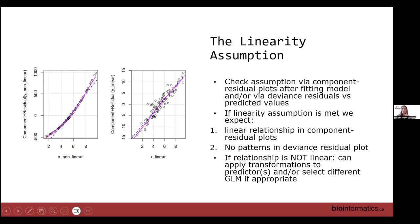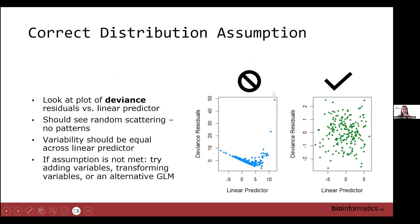Another way to check linearity is with deviance residual plots — you want to see no pattern in that plot. For the correct distribution assumption, we look at plots of the deviance residuals versus the linear predictor. Deviance residuals are similar to regular residuals but have been scaled to account for the expected variance structure — for example, in Poisson we don't expect constant variance across fitted values. Once plotted, we expect constant variability with no patterns if we have the correct distribution and linearity assumption met.